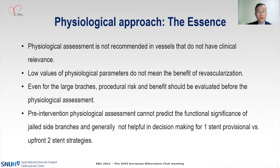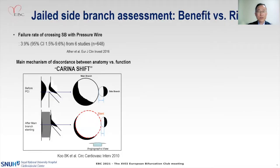For large branches, we have to assess the procedure risk and benefit before performing physiological assessment. We have to admit that pre-intervention physiological assessment cannot predict the functional significance of side branches, and it is generally not that helpful in decision-making for one-stent provisional versus upfront two-stent strategy.